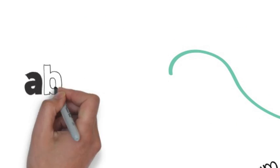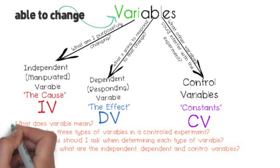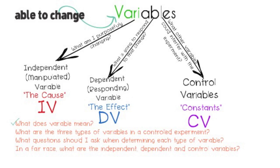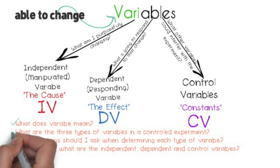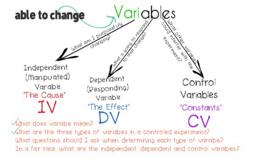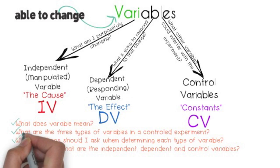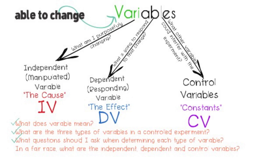Variable means able to change. The three types of variables are: independent or manipulated, otherwise known as the cause; dependent, which is the effect; and control variables, or constants. For the independent variable, ask: what are you purposely changing? What is the cause in the cause-and-effect relationship you're testing? For the dependent variable, ask: what's going to respond to that change? The constant is not the independent or dependent variable — that will be your control variable. In the race, the cause was the runner, the effect was the time, and the constants were everything else — for example, the weather and the time they started.